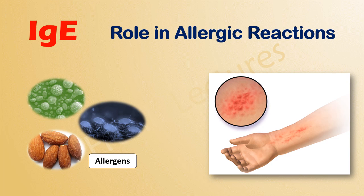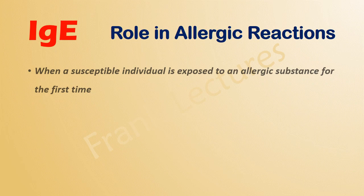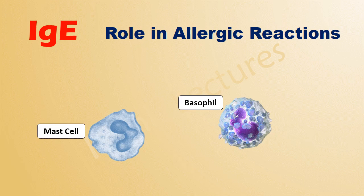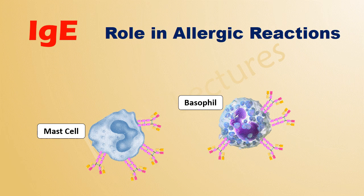But the immune system of sensitive or allergic people recognizes these substances as dangerous. When there is an initial or first exposure to an allergen, B cells are activated. These B cells differentiate into IgE-producing plasma cells. The IgE antibodies then attach themselves to mast cells and basophils by their Fc regions.